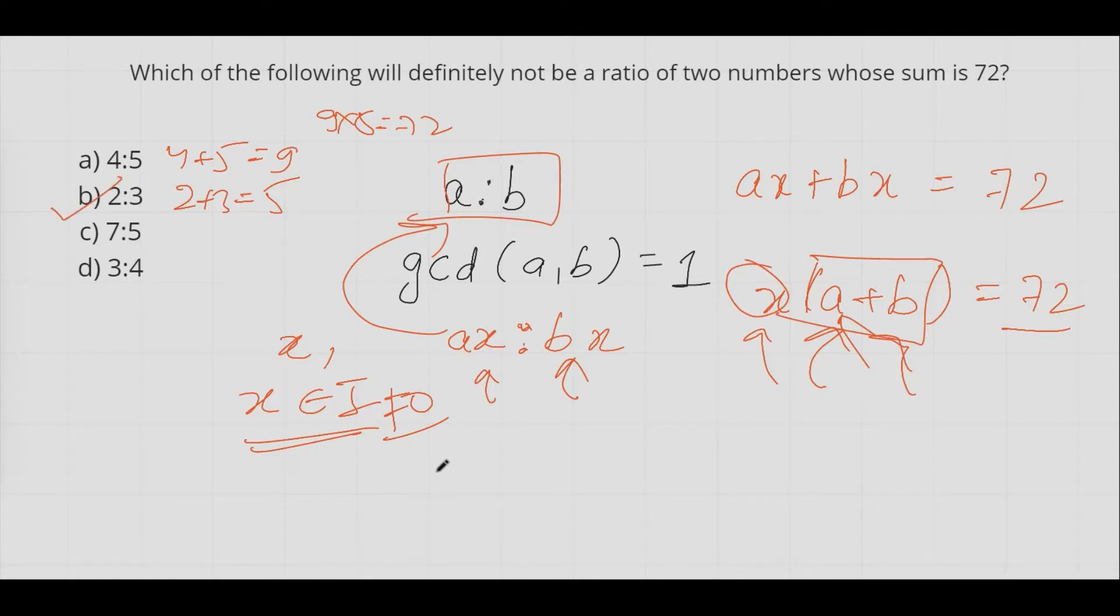Let's check the other options as well. Seven is to five, seven plus five equals to 12. Does 12 divide 72? Yes, 12 times 6 equals to 72.